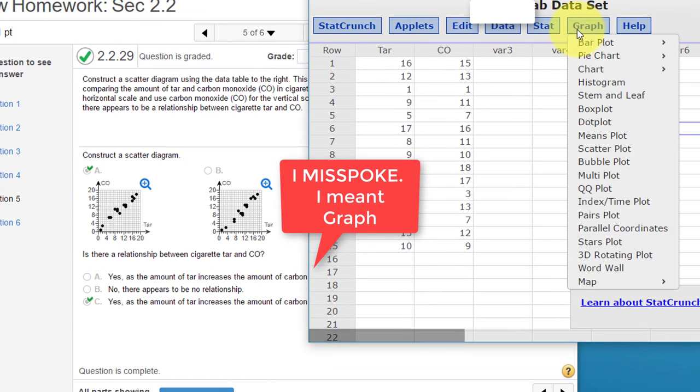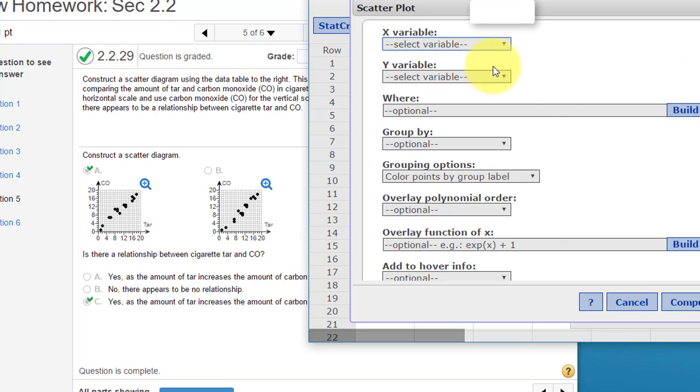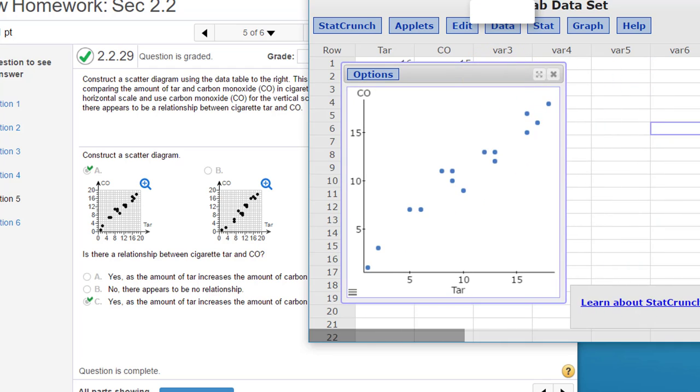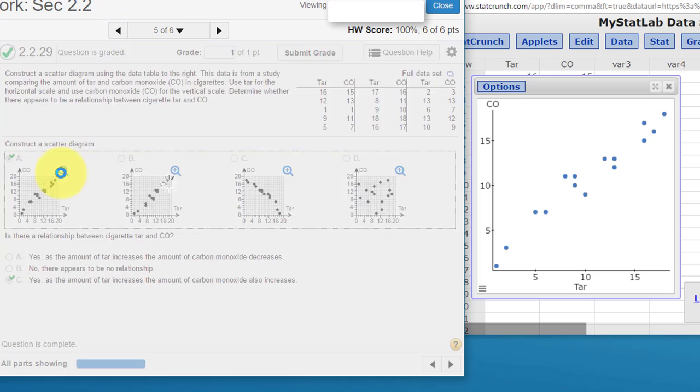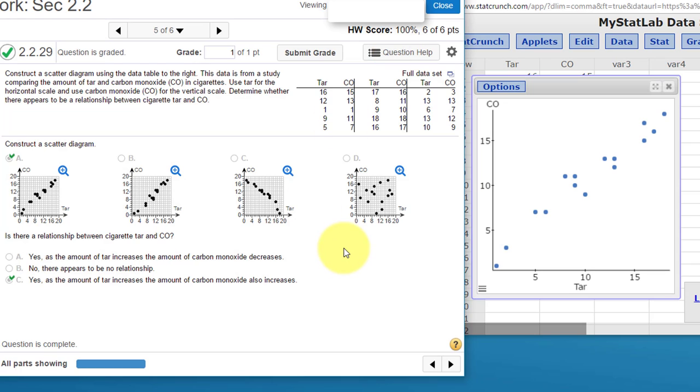We go to Stat and select Scatter Plot. For the x-axis, the horizontal, they want tar. For the y-axis, the vertical, they want CO. Click on Compute, and we've got a nice scatter diagram that we need to compare. Let's blow that one up so we can see more detail. Yeah, that matches the one we have. So that problem is pretty easily solved.